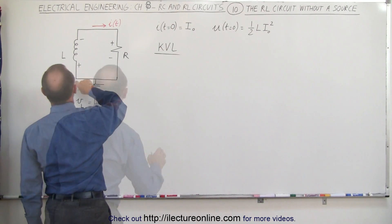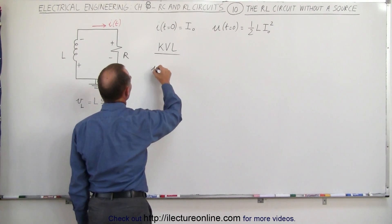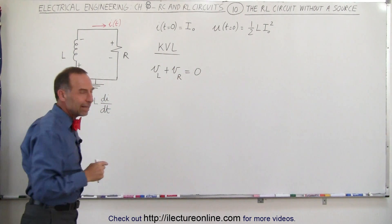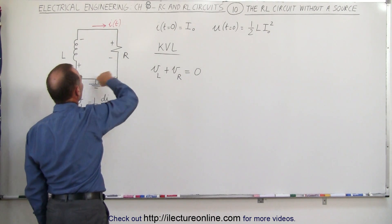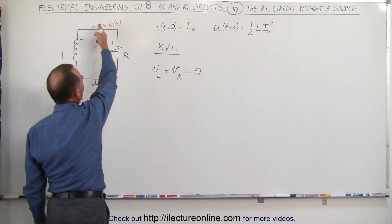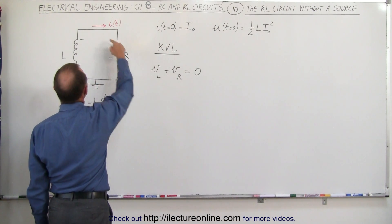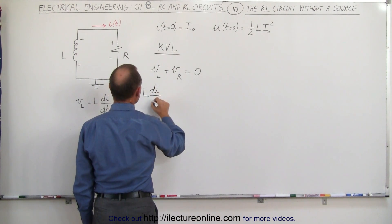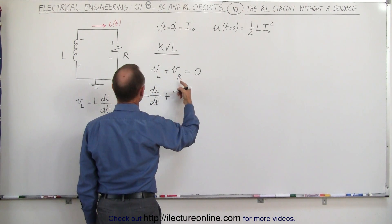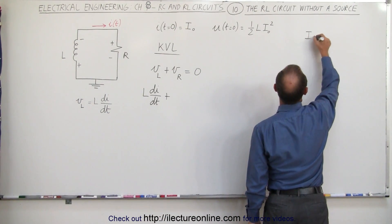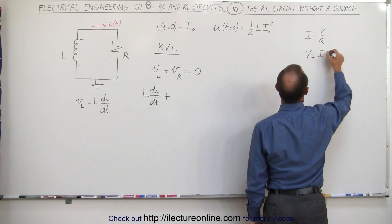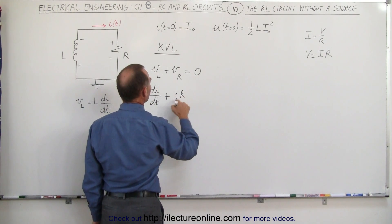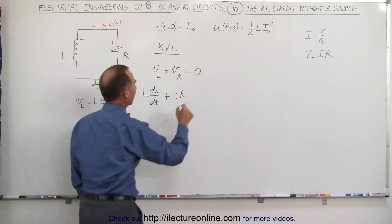Starting at this point right here, we simply add the voltages around the circuit, which means that the voltage across the inductor plus the voltage across the resistor must equal zero. If we go around the circuit in the opposite direction, notice we go from negative to positive — against the assumed direction of the current — so we'll have a voltage rise across the resistor and a voltage rise across the inductor as labeled. This gives us L di/dt plus, using Ohm's law where V equals I times R, we write I times R for the instantaneous voltage across the resistor, and that adds up to zero.